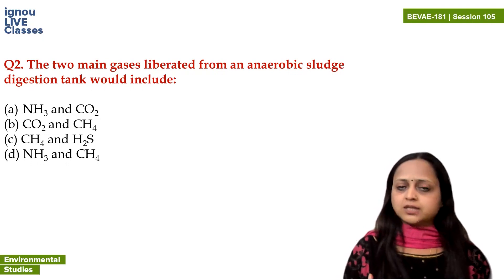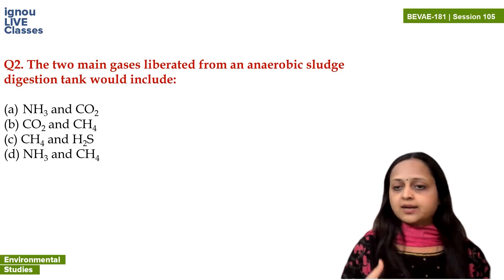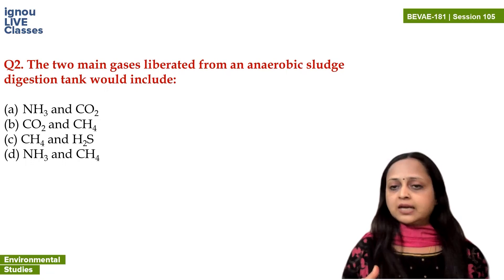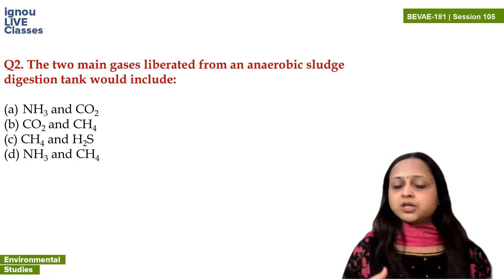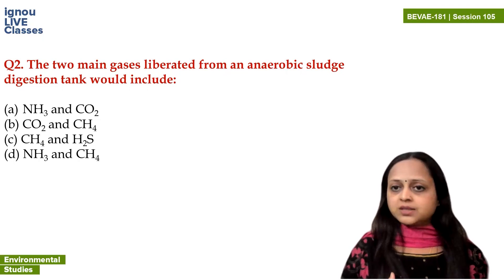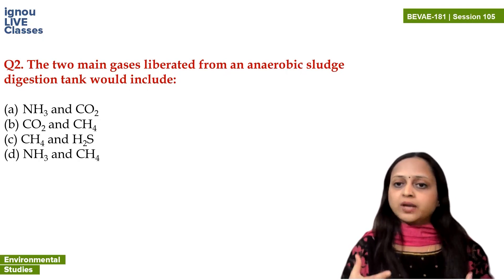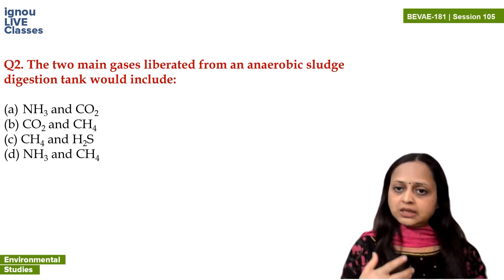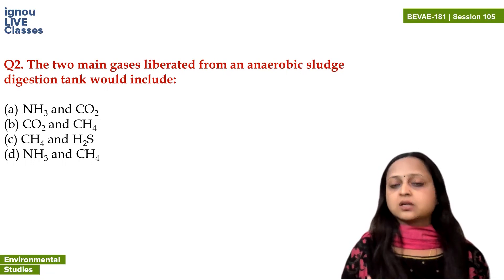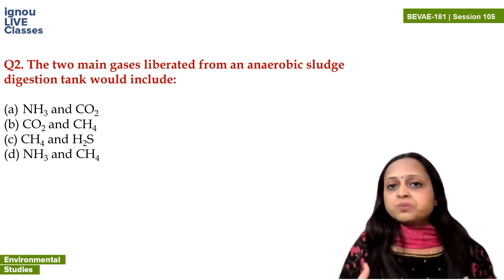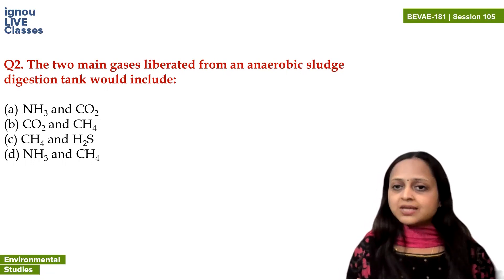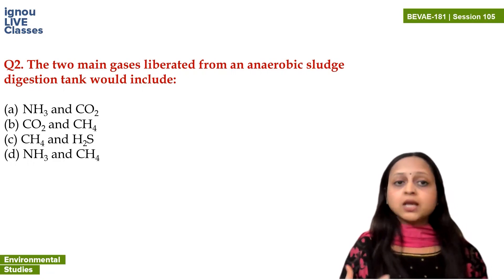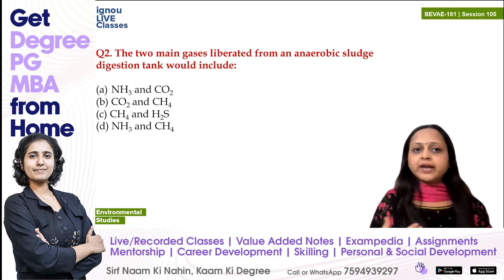Sludge is full of microorganisms, so we have to digest it in a sludge digestion tank. If we are using the anaerobic process, which gases will come out? The options are: ammonia, CO2, CH4 (methane), hydrogen sulfide, or combinations of these.